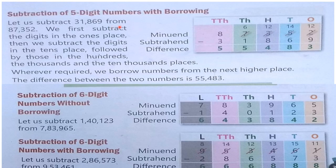Now here, with five-digit numbers and borrowing: we need to borrow when the subtrahend is greater than the minuend. When the subtrahend is greater than the minuend, in that situation we need to borrow the number, as you can see here.